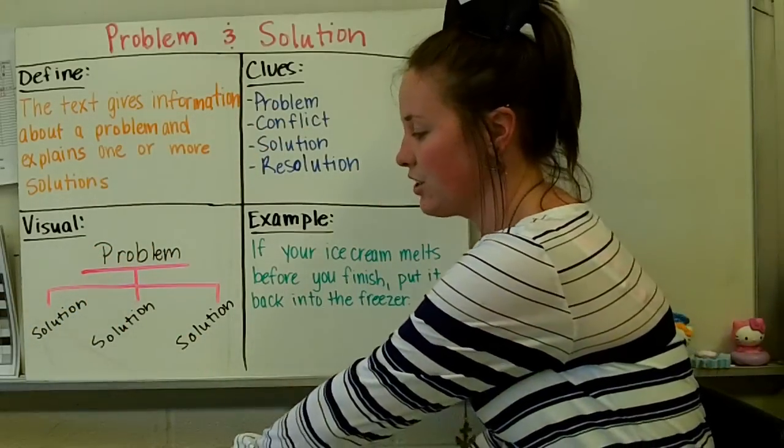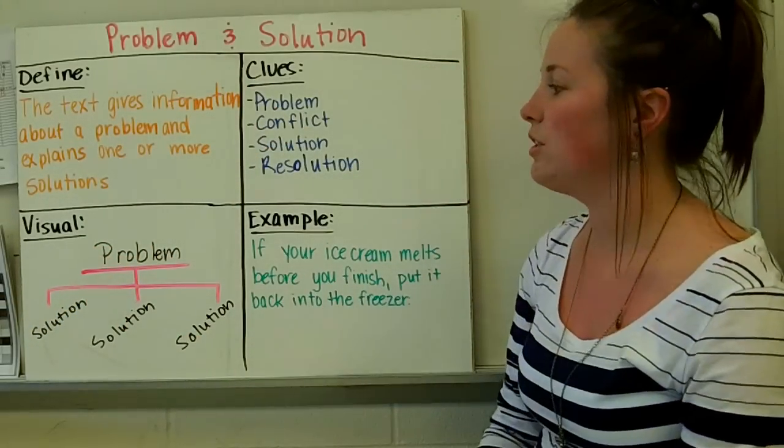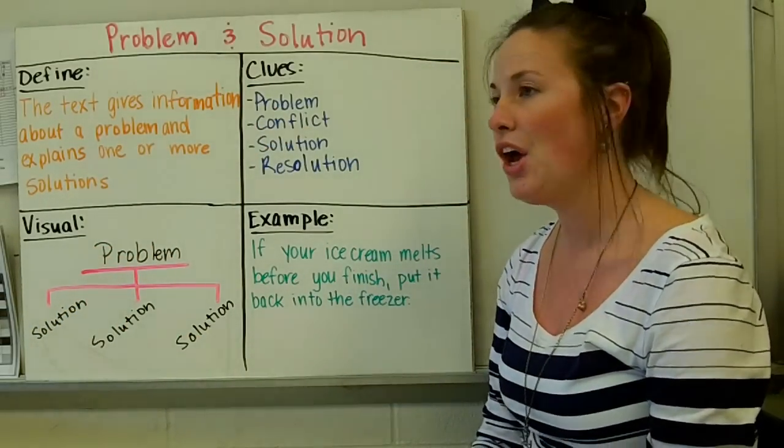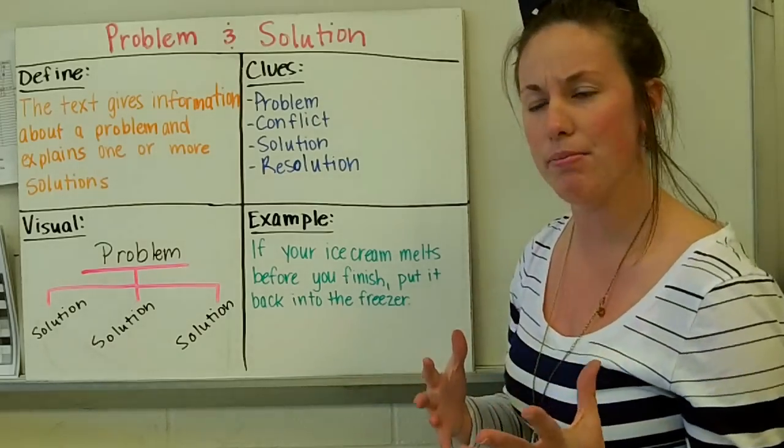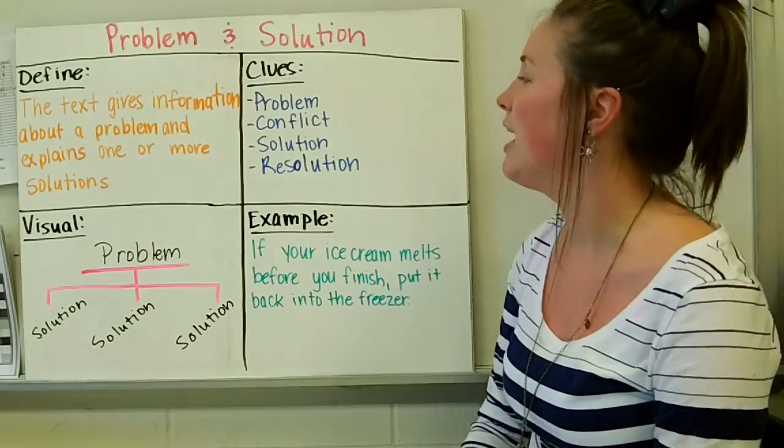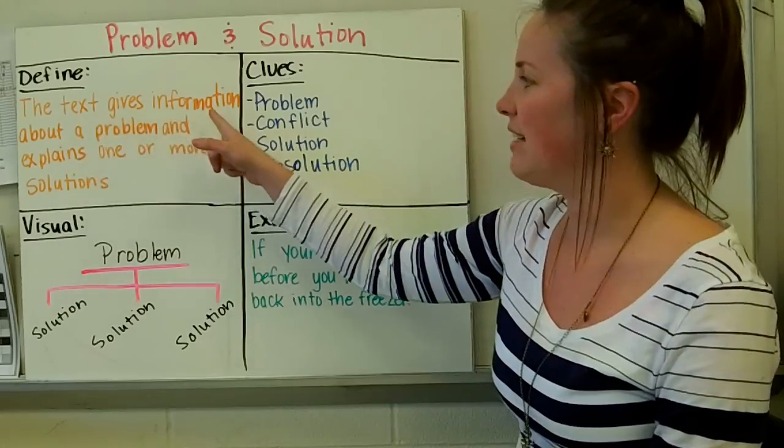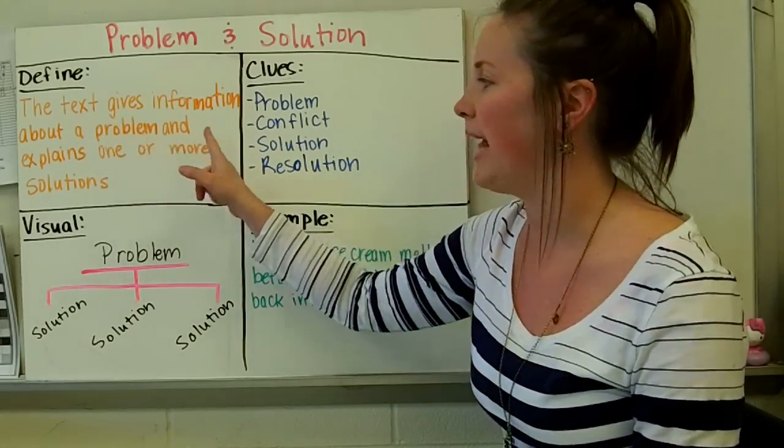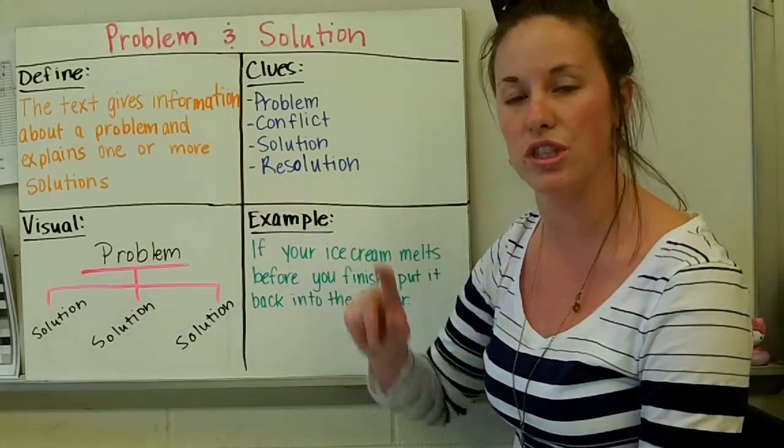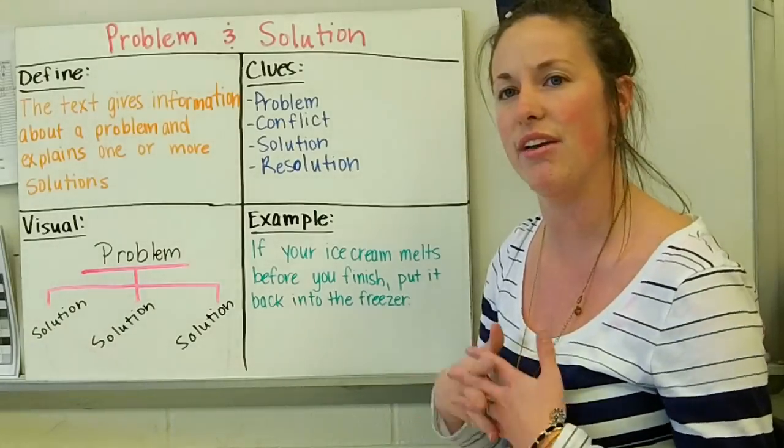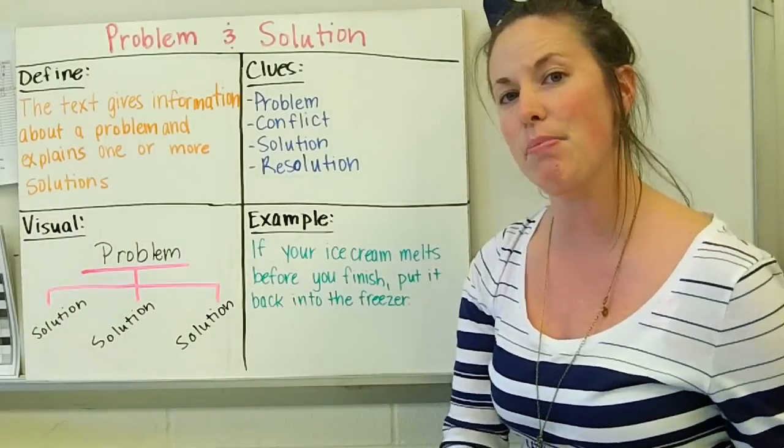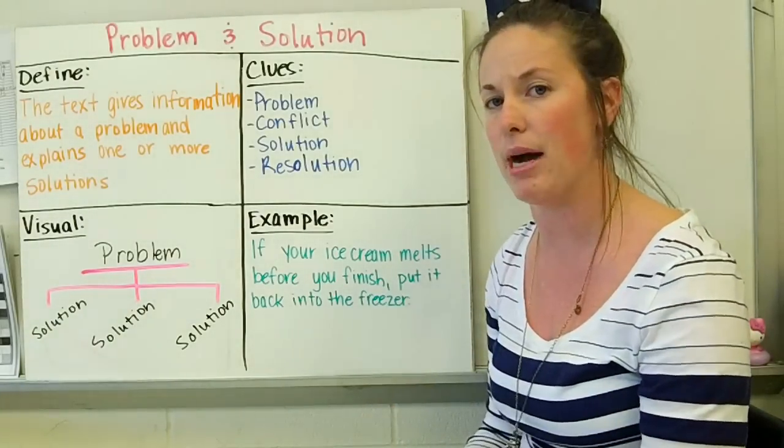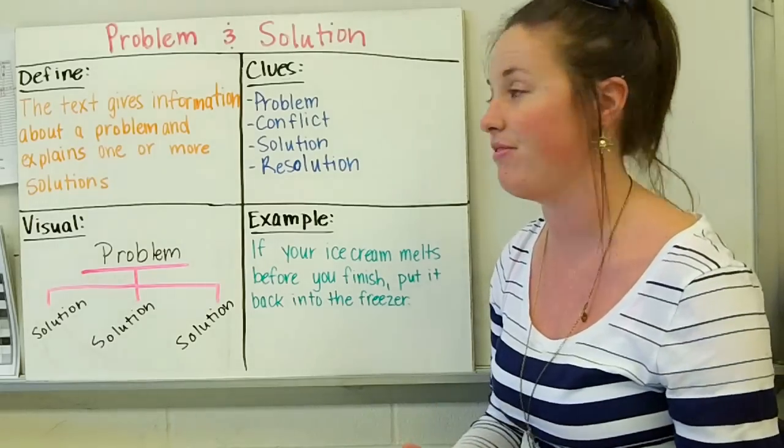The third text structure is problem and solution. We all know problem and solution. You have a problem, you try and find a solution. So a good definition for it would be, the text gives information about a problem and explains one or more solutions. So the text is going to give you a problem and then it's going to tell you possible ways that you could fix that problem or ways that the problem has been fixed.